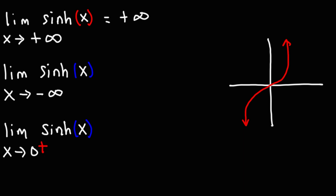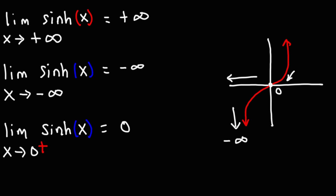What about as x approaches negative infinity? In this case, we're going to the left along the x-axis. Following the curve, we can see it goes down to negative infinity in the y direction, so the y-value will be negative infinity. As x approaches 0 from the right, the y-value becomes 0. So that's the answer for that problem.